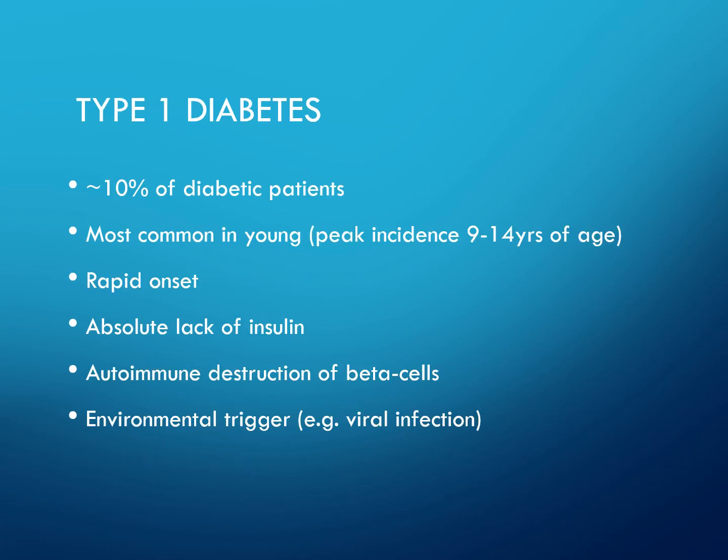Type 1 diabetes affects 10% of diabetic patients. It is most common in young people, with a peak incidence at 9 to 14 years of age. It has a rapid onset, and an absolute lack of insulin results from autoimmune destruction of beta cells. There is thought to be an environmental trigger such as a viral infection.